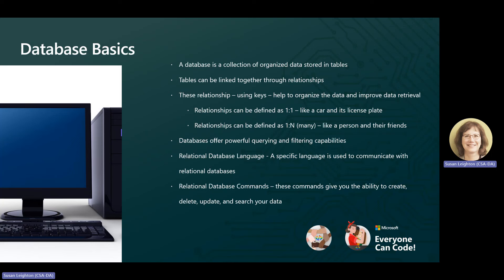Database basics. Here are the basics of what's under the hood of databases. A relational database is a collection of organized data. The data is stored in tables — think of these as rows of data, all structured the same way, like having a telephone list with a column for a name and a column for a phone number. The tables can be linked through relationships using keys to help us organize the data and find the data through very powerful capabilities to run queries and filter the data.